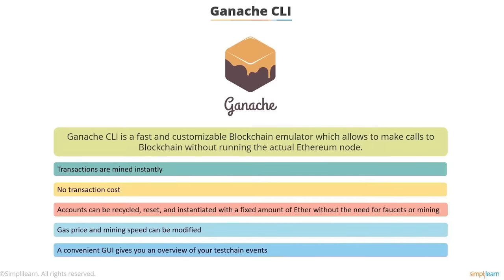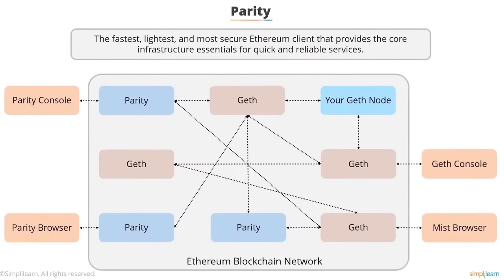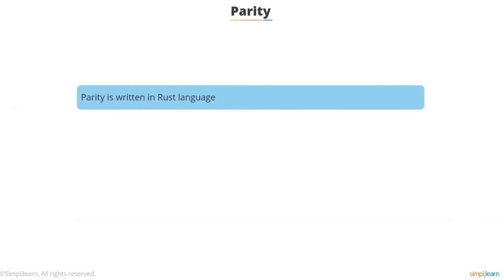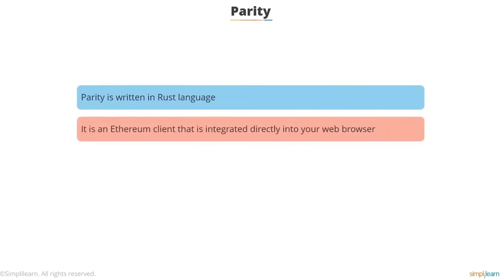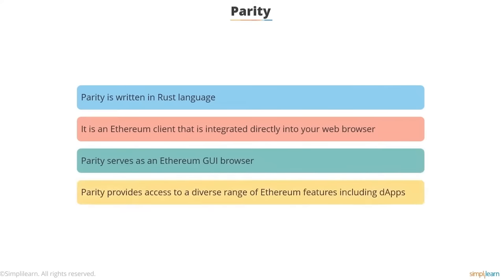Parity is the fastest, lightest, and most secure Ethereum client that provides core infrastructure essentials for quick and reliable services. It is written in Rust language, offering better reliability, code clarity, and performance. It is an Ethereum client integrated directly into your web browser — apart from allowing users to access basic Ether and token wallet functions, it also serves as an Ethereum GUI browser providing access to a diverse range of Ethereum features including DApps.